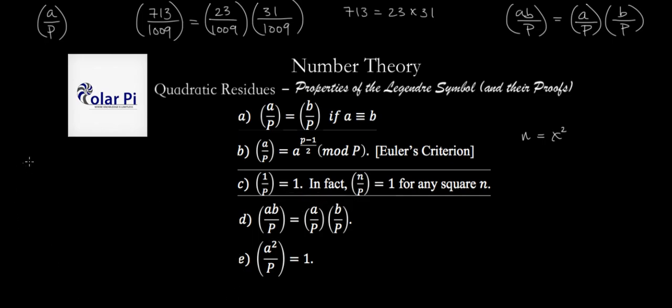To prove part D, we start with the fact that A times B over P by property B will have to be equal to AB to the power of P minus one over two. But this here is the same as writing A to the power of P minus one over two times B to the power of P minus one over two.